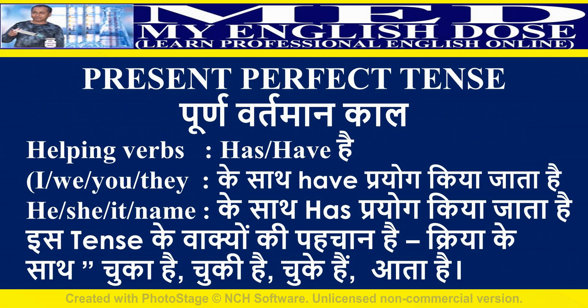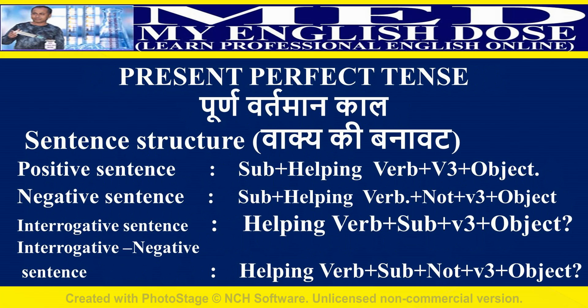Present perfect tense helping verbs are 'has' and 'have'. The identification of this tense is that the work has just finished. Sentence structures: Positive — subject plus helping verb plus third form of a verb plus object. Negative — subject plus helping verb plus not plus third form of a verb plus object. Interrogative — helping verb plus subject plus third form of a verb plus object. Interrogative negative — helping verb plus subject plus not plus third form of a verb plus object.